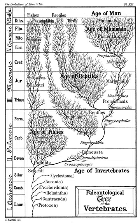Rapid environmental changes typically cause extinctions. Of all the species that have ever existed on Earth, 99.9% are now extinct. Since life began on Earth, five major mass extinctions have led to large and sudden drops in the variety of species. The most recent, the Cretaceous-Paleogene extinction event, occurred 65 million years ago.